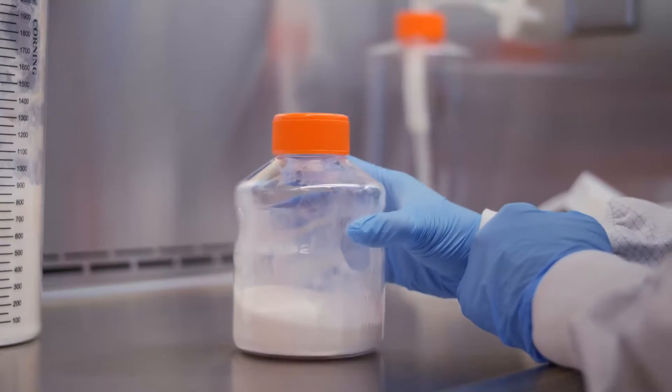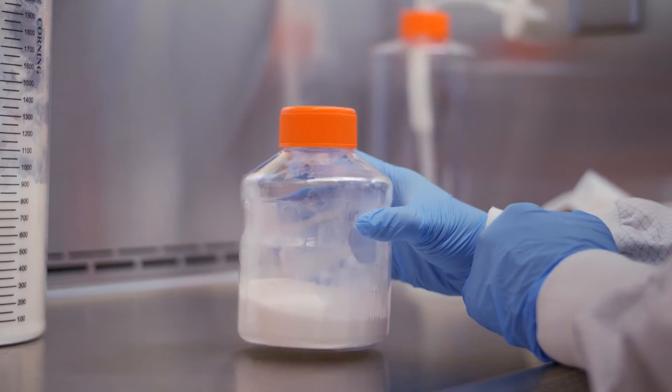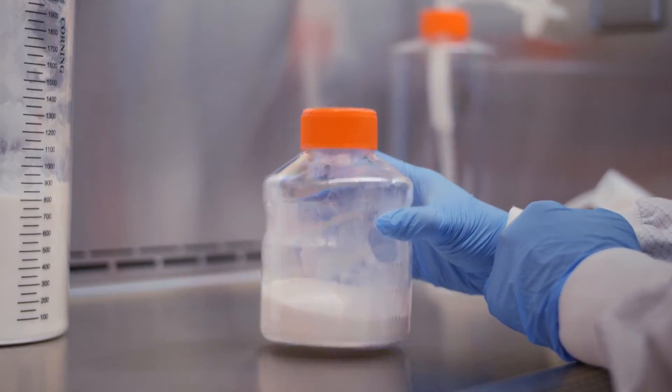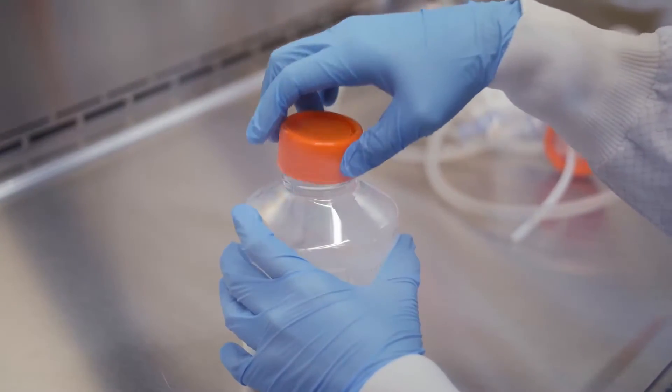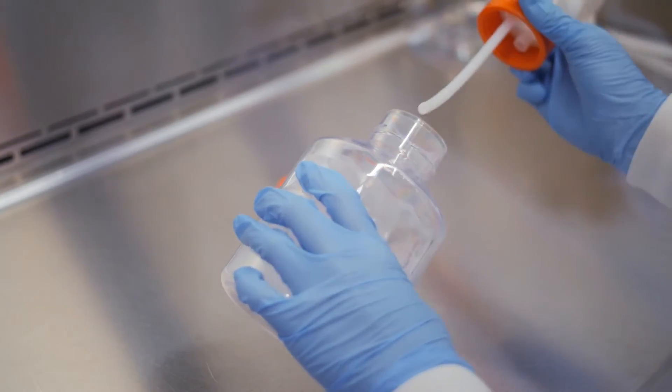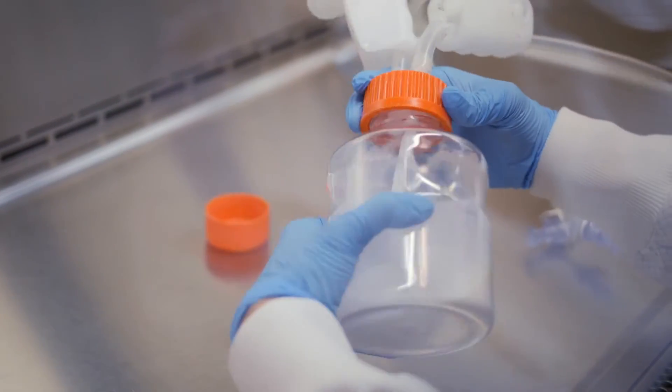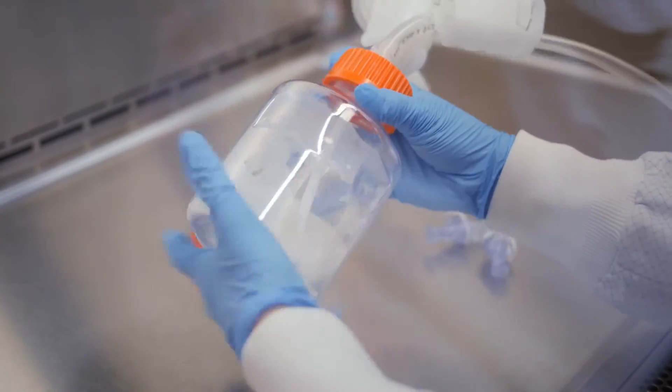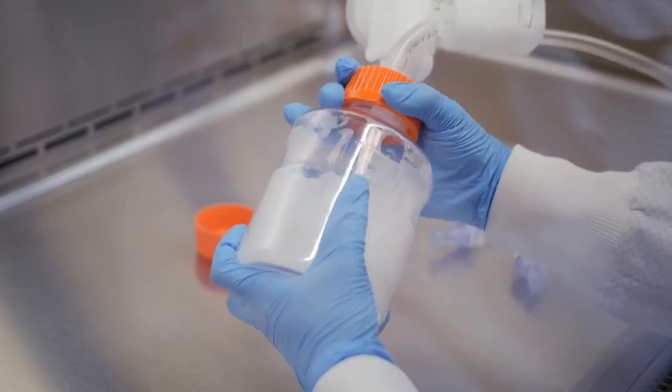Gently tap the bottle on a solid surface to dislodge the microcarriers from the bottle cap. Aseptically remove the microcarrier cap and insert the dip tube from the Corning aseptic transfer cap. Hold the microcarrier bottle at a 45 degree angle to prevent the dip tube from damaging the microcarriers.